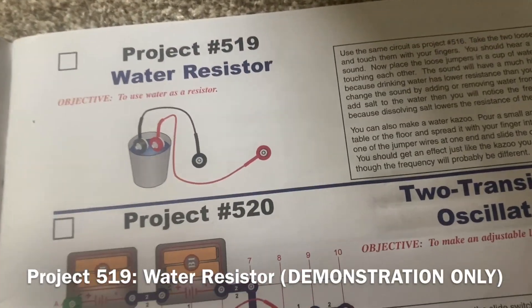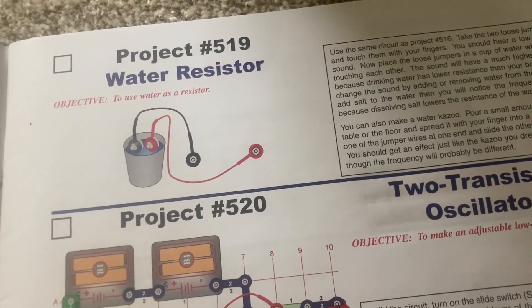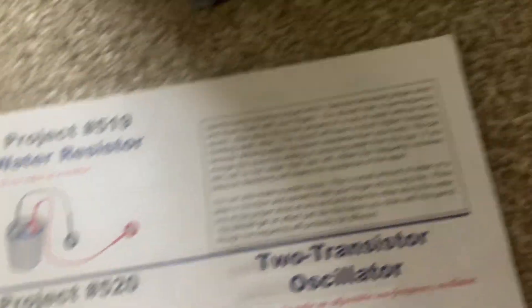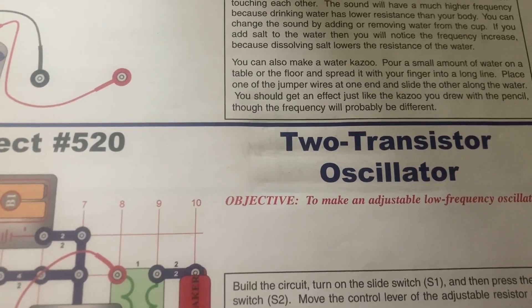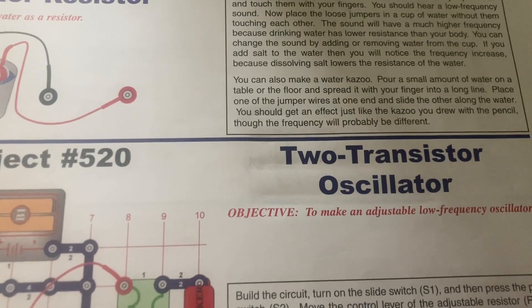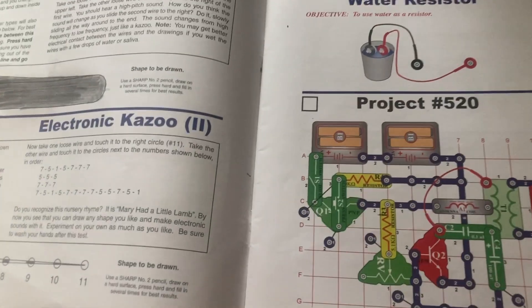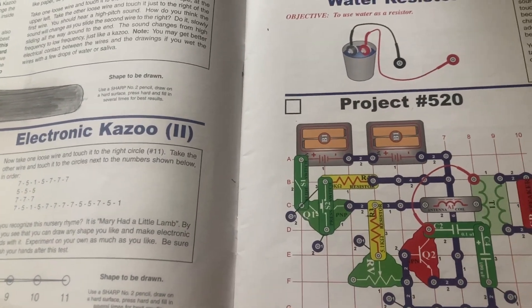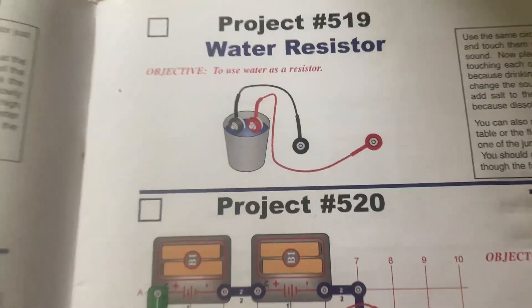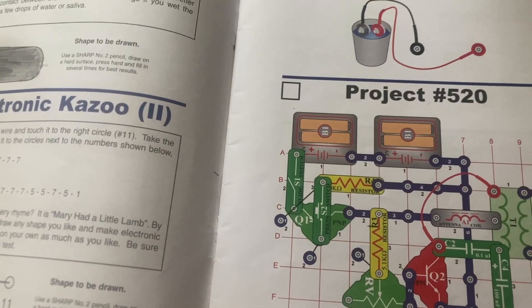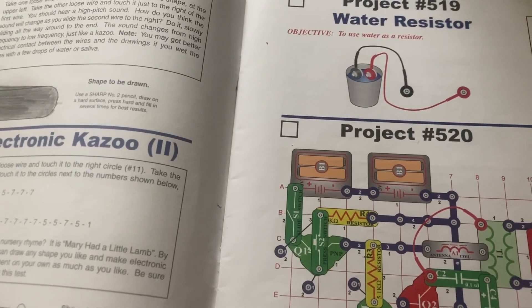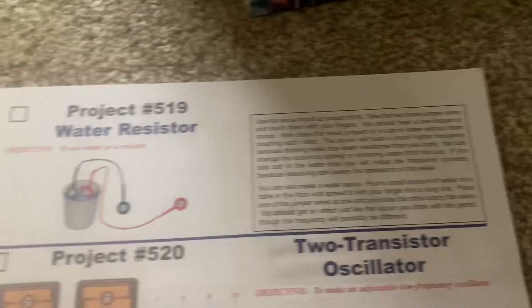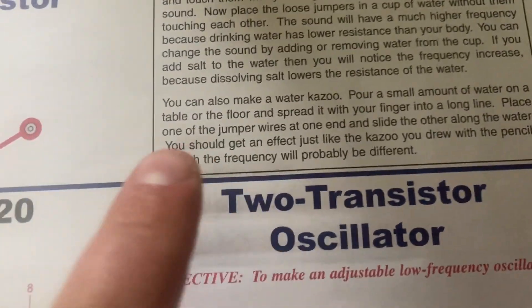Now you can even make a water resistor and use the circuit from project 516, then place the loose jumper wires in a cup of water. And the sound will have a much higher frequency because water has a lower resistance. Also feel free to add salt or other elements to the water to see how it affects its conduction of electricity. You can even make a water kazoo by following the instructions here.